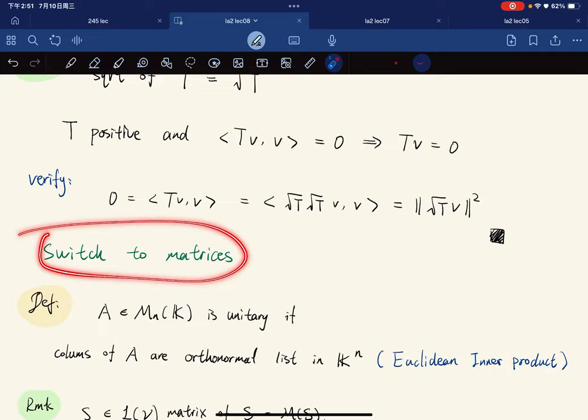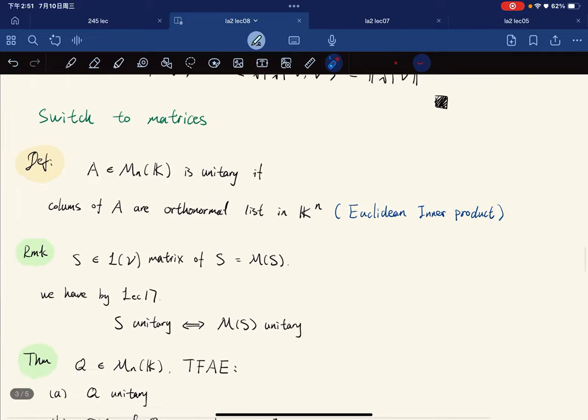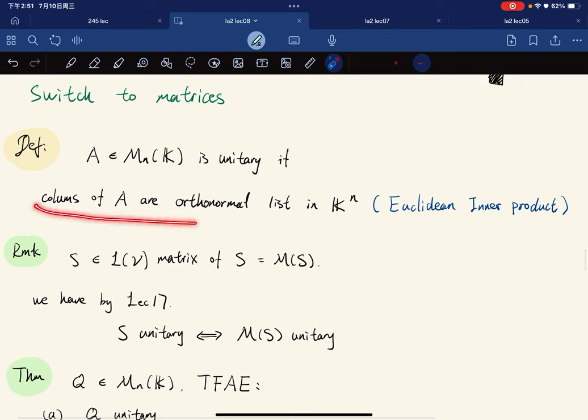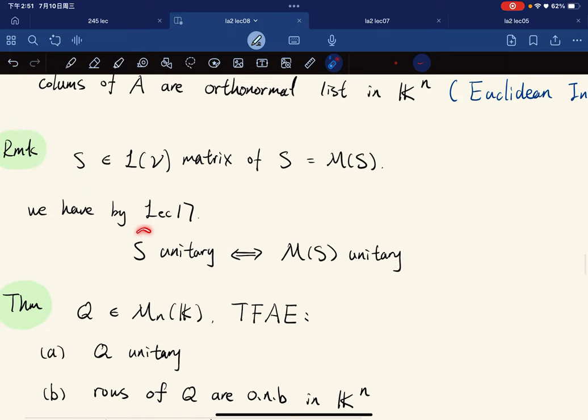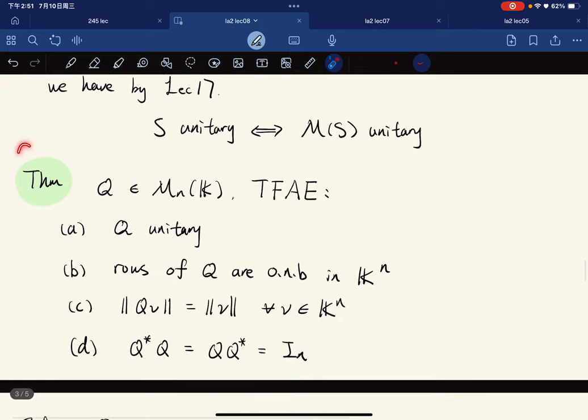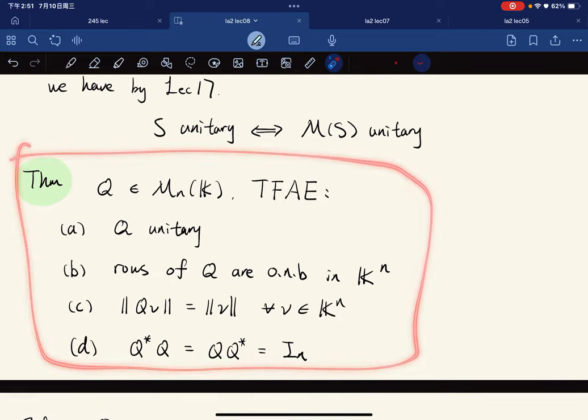Now we switch our viewpoint to matrices. We say that a matrix is unitary if the columns are orthonormal in C^n equipped with Euclidean inner product. Given the matrix of S equals M_S, we have that S is unitary if and only if the matrix is unitary.